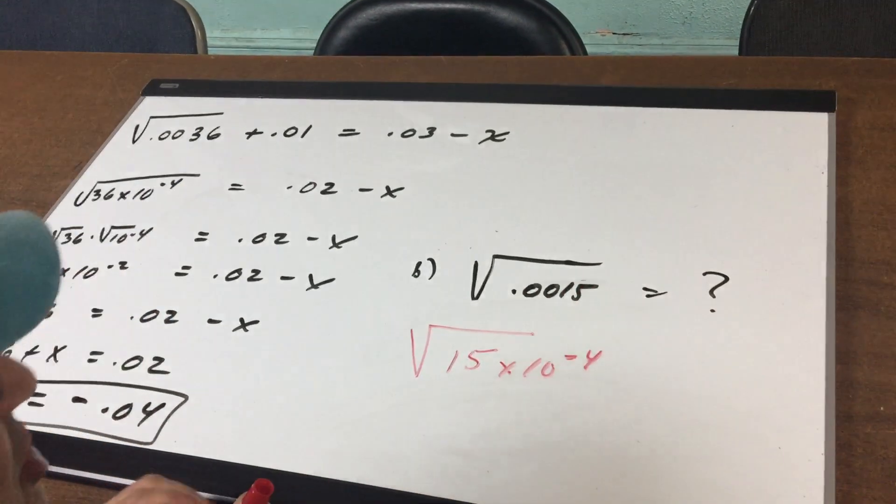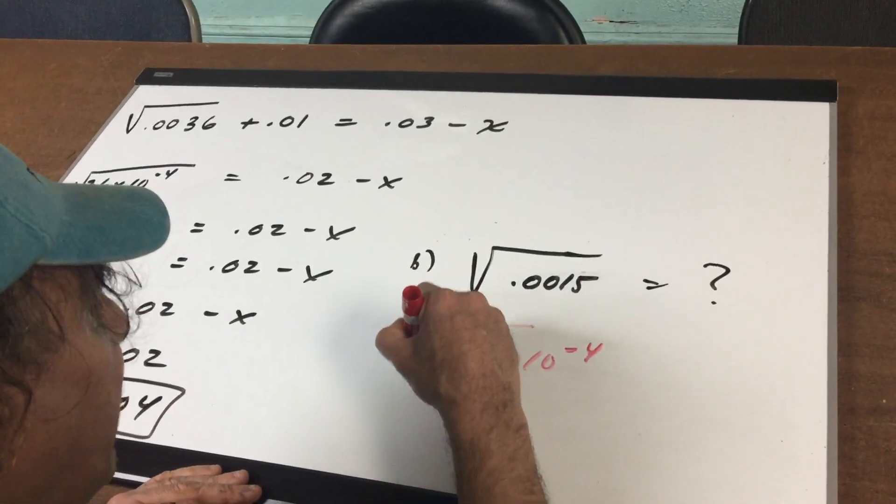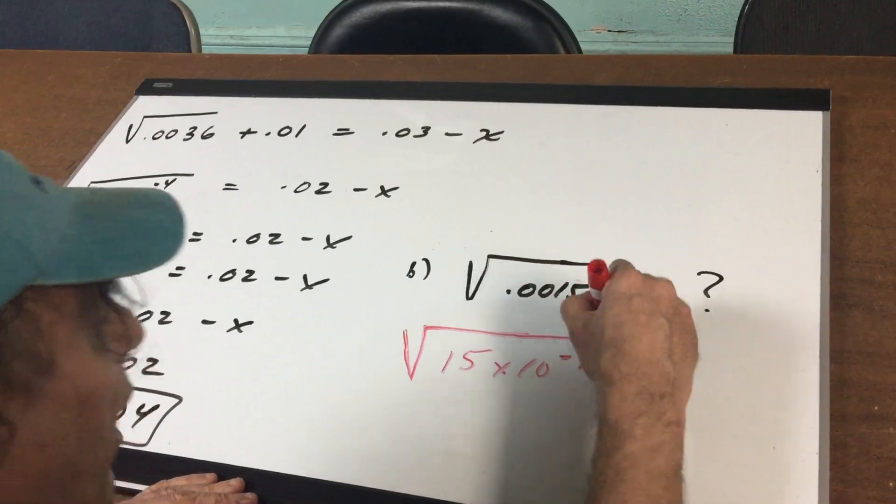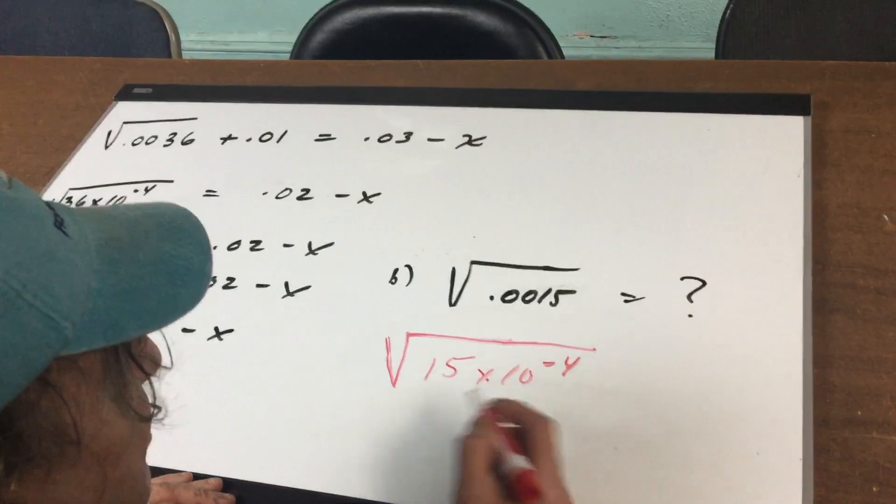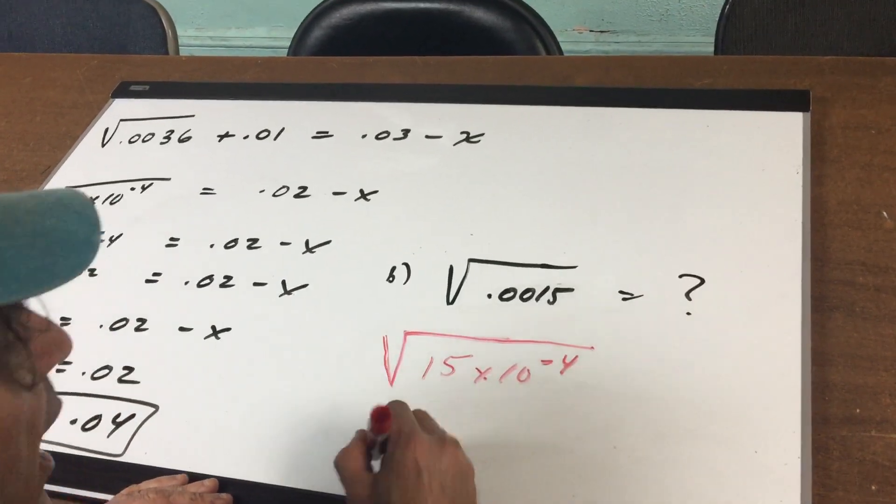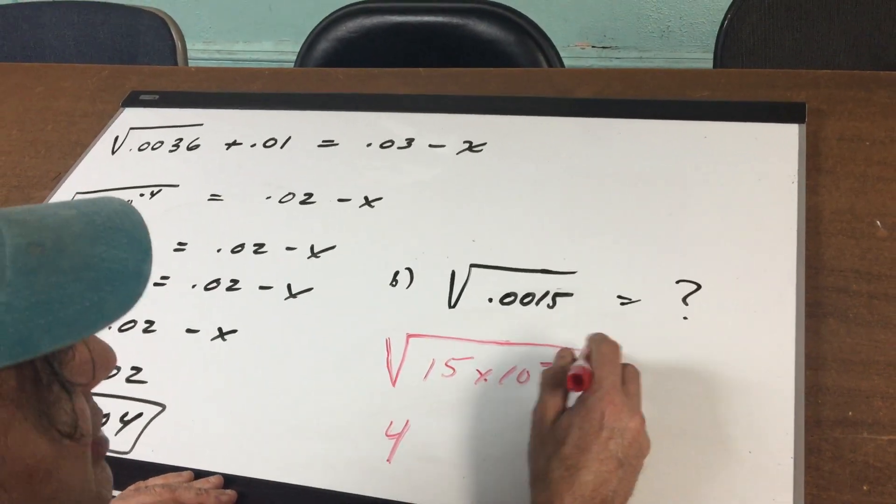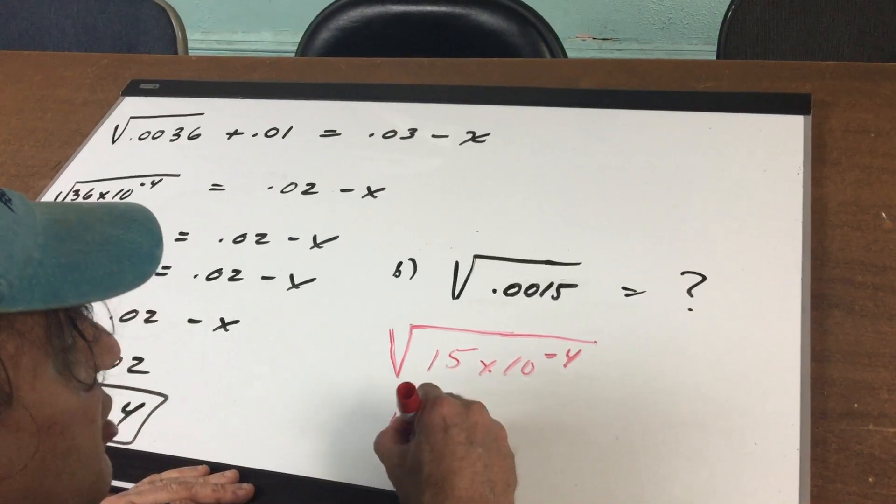So the square root of 15 times 10 to the minus 4th - well, the square root of 15 is very close to the square root of 16, which becomes 4, and the square root of 10 to the minus 4th is 10 to the minus 2.